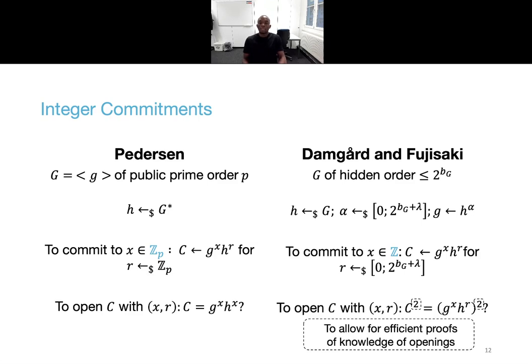To open a commitment, it suffices to check that c squared is equal to g^x h^r squared. The squaring is simply an artifact to later allow for efficient arguments of knowledge of openings. It means that the scheme would still be binding without the squaring, but it would then not be possible to efficiently argue knowledge of openings under the assumptions on the group. The main underlying reason is that elements of order 2 may be easily computable, and therefore one must relax the commitment opening equation.